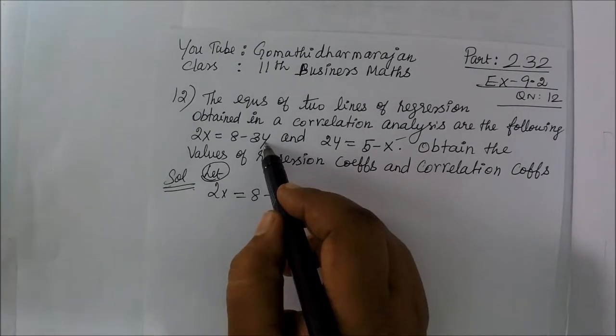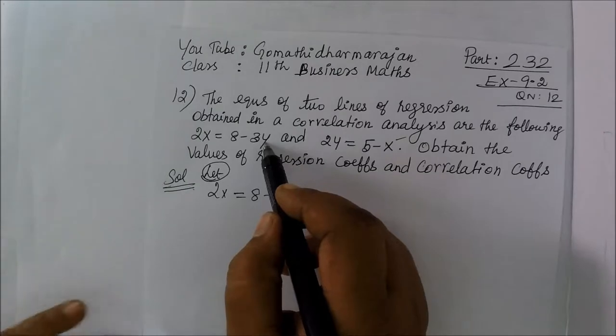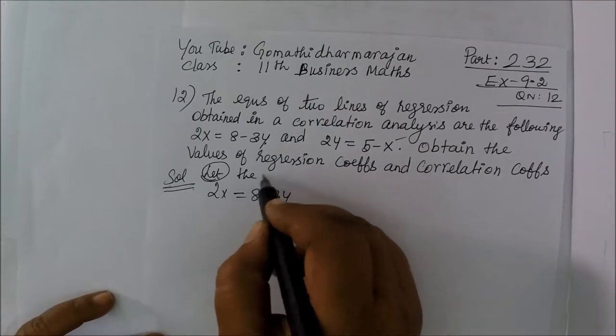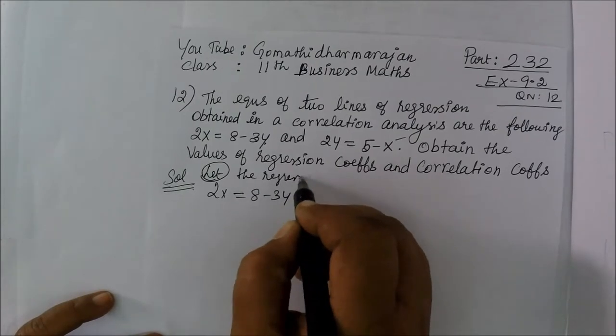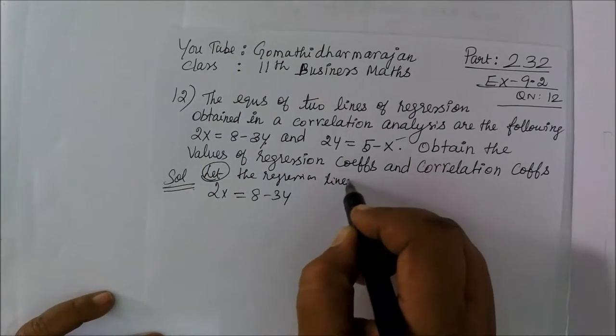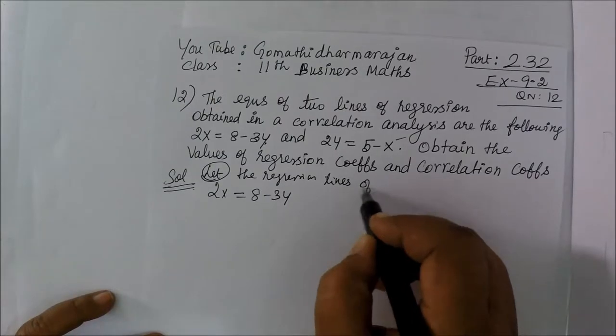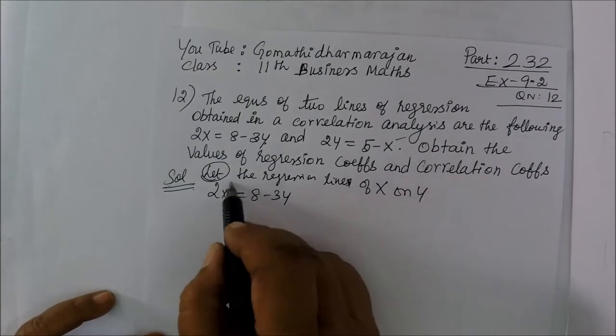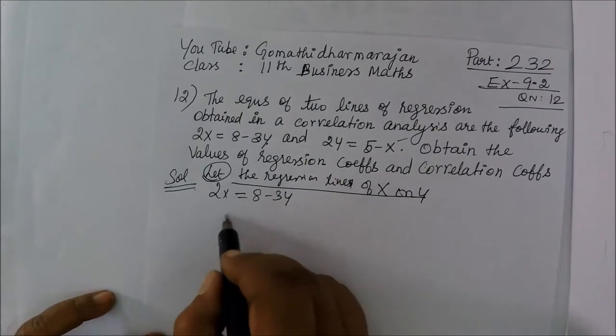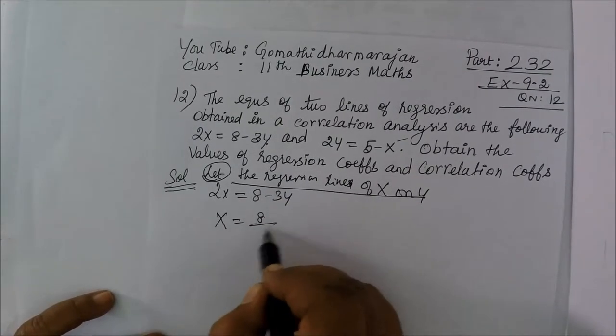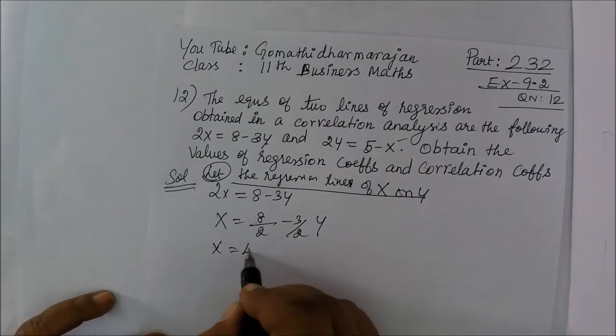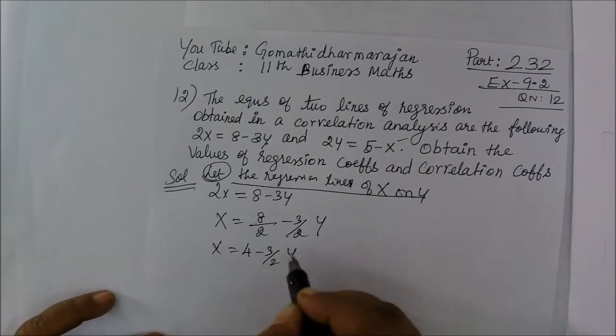We want to find the regression coefficient. Let the regression line of x on y. So x is equal to 4 minus 3 by 2 y.